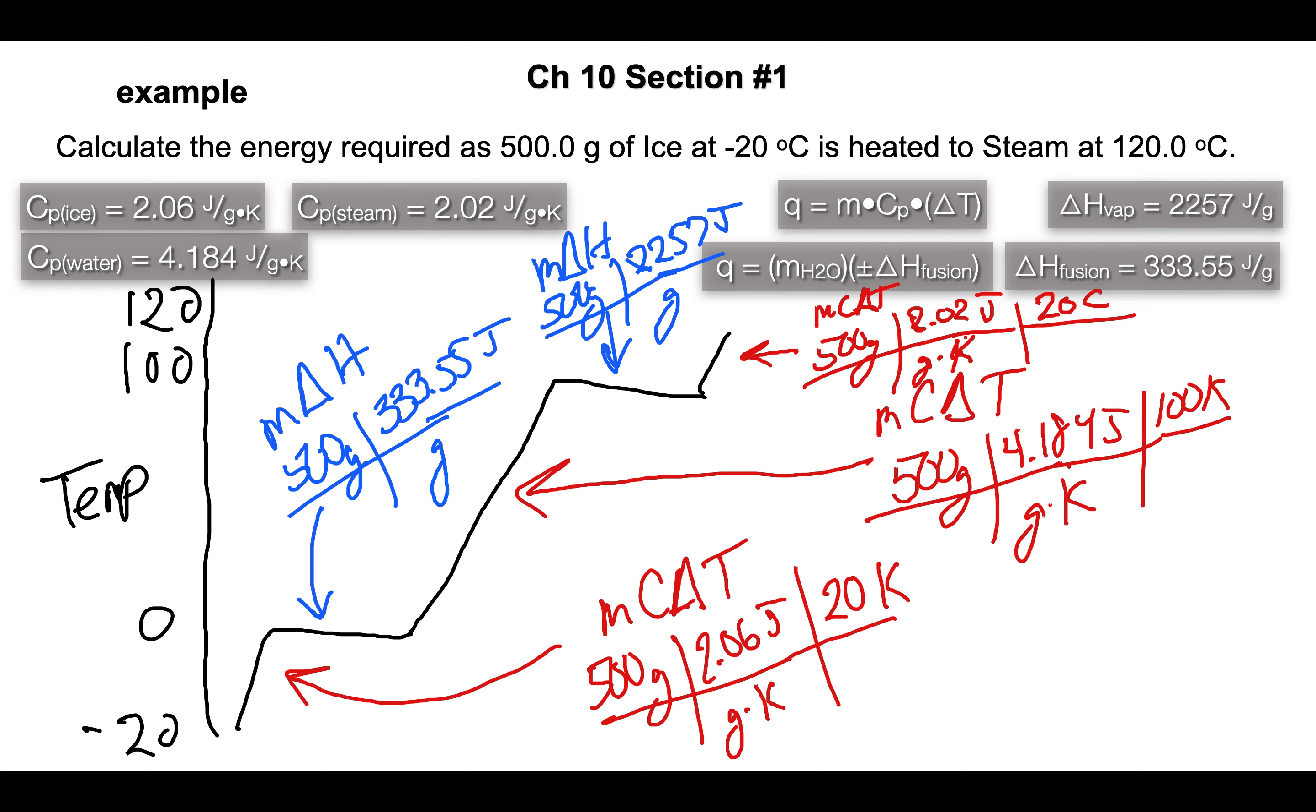And once we add all that up, that will be the energy required to raise the temperature of 500 grams of ice from negative 20 all the way to 120.